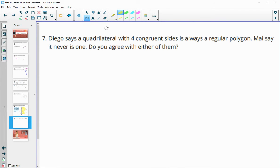Number seven, Diego says a quadrilateral with four congruent sides is always a regular polygon. Mai says it is never one. Do you agree with either of them? So four congruent sides. Remember that regular means that it has equal sides and equal angles.